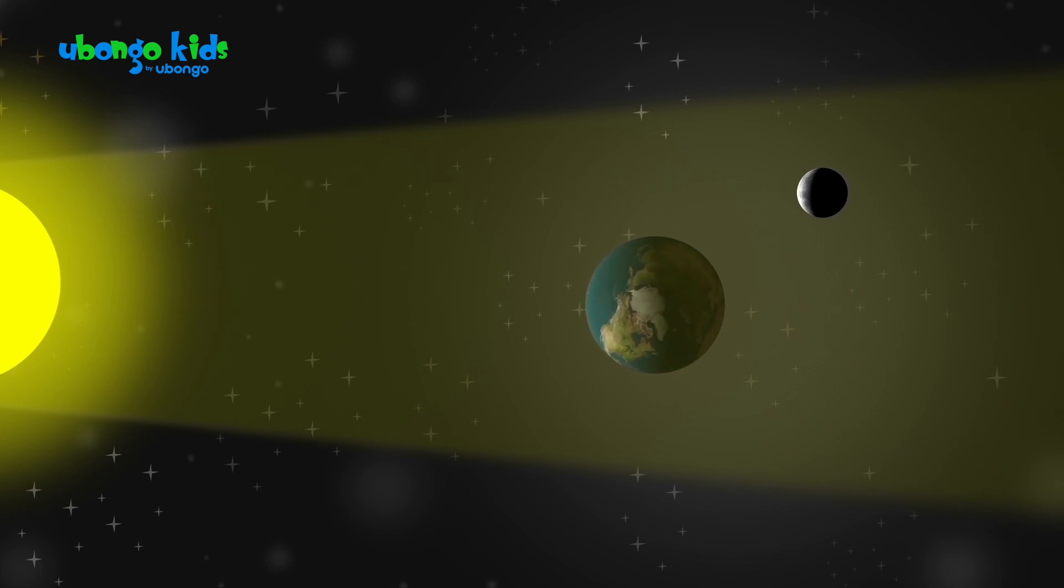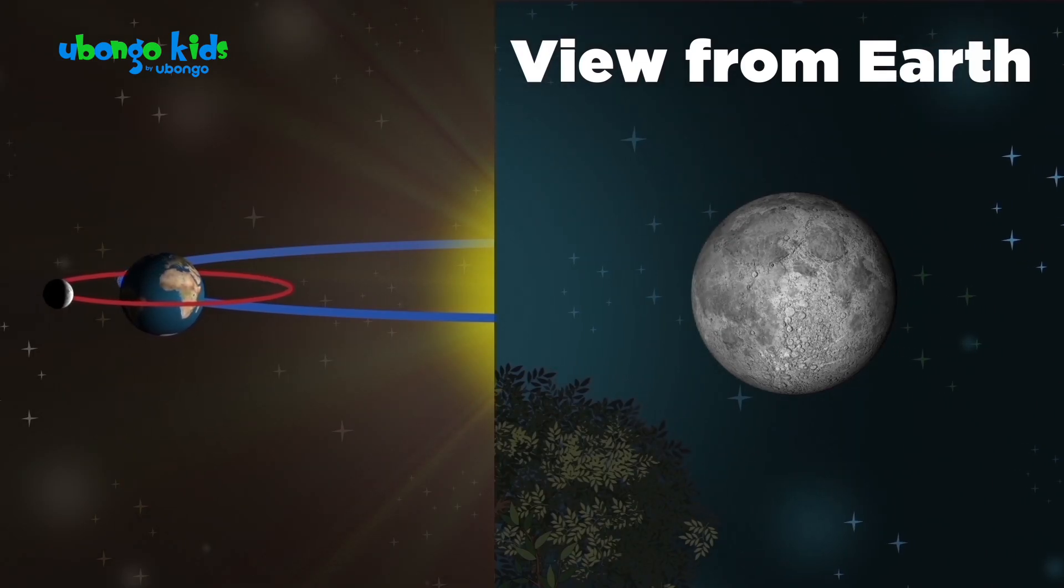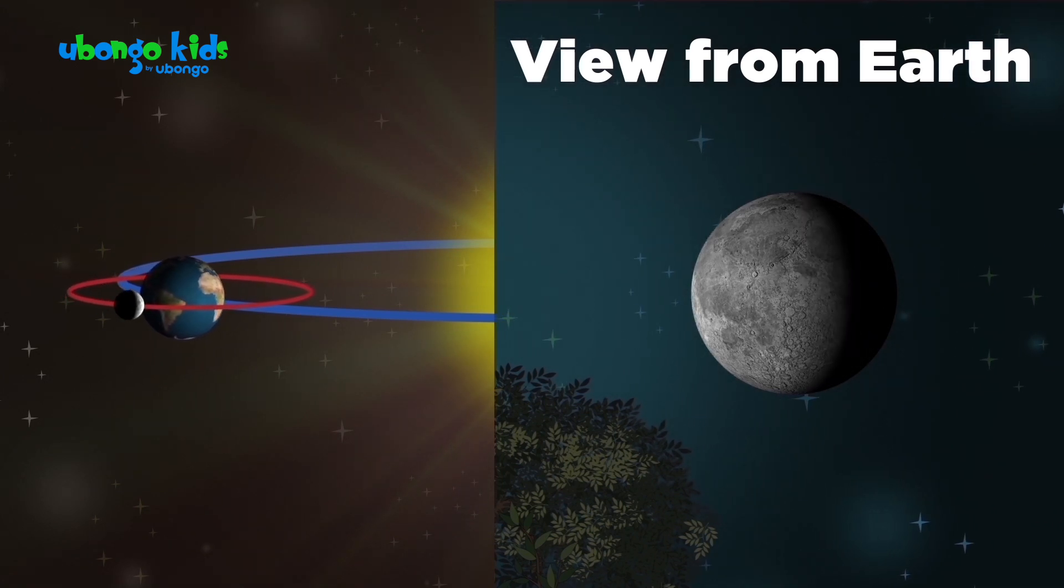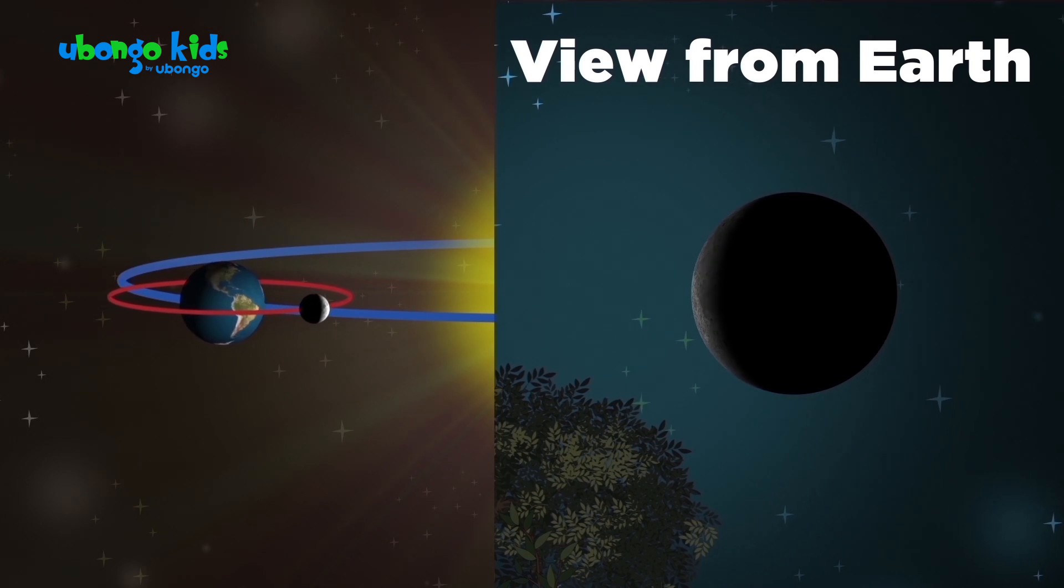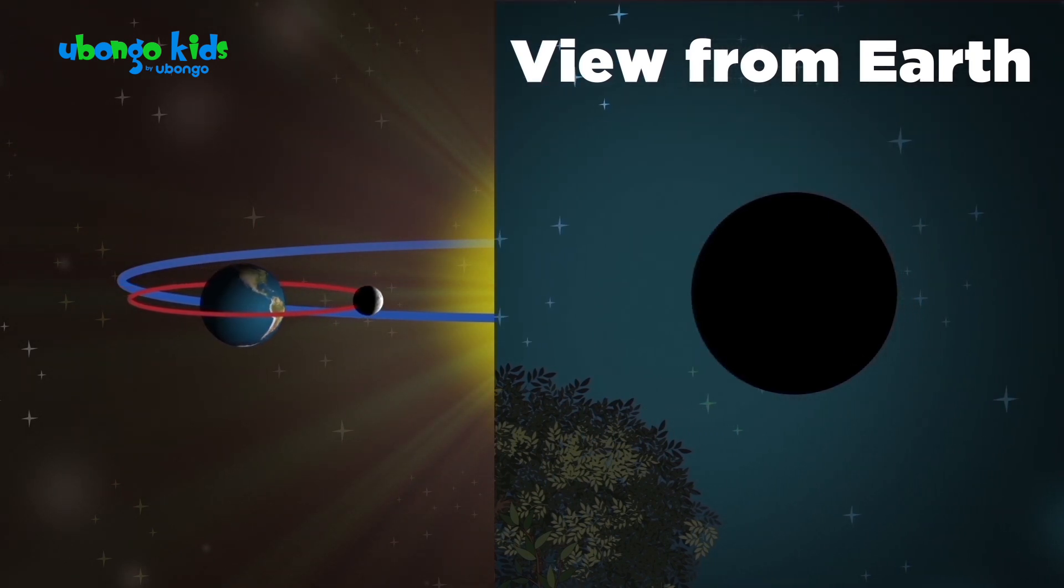The sun's rays light it up for us to see from all the way down on Earth. But because the moon is orbiting the Earth, the sun hits it in different ways, depending on where the moon is on its path around the Earth.